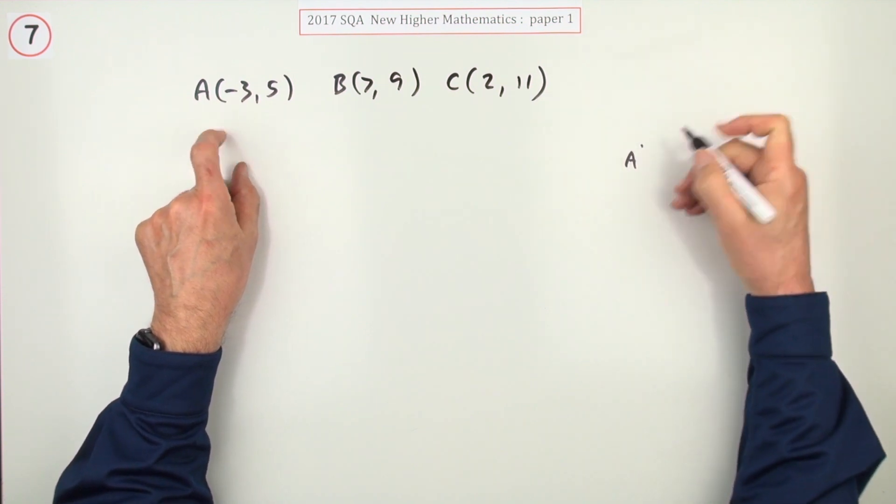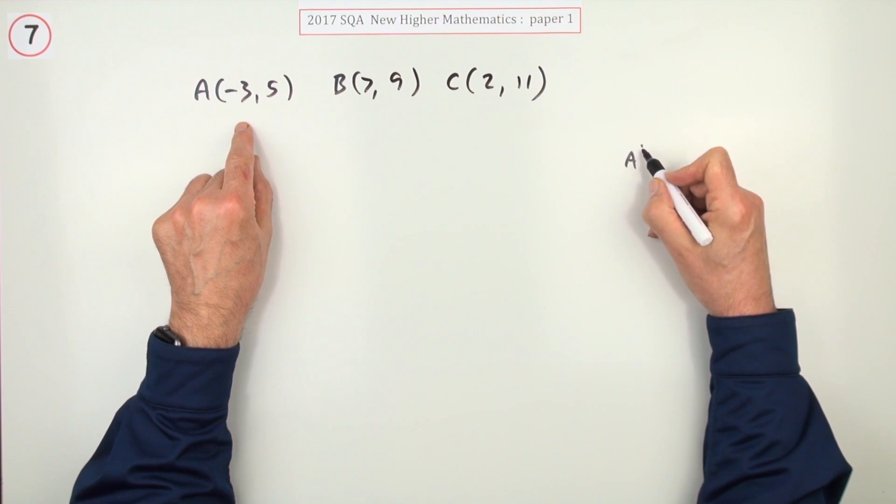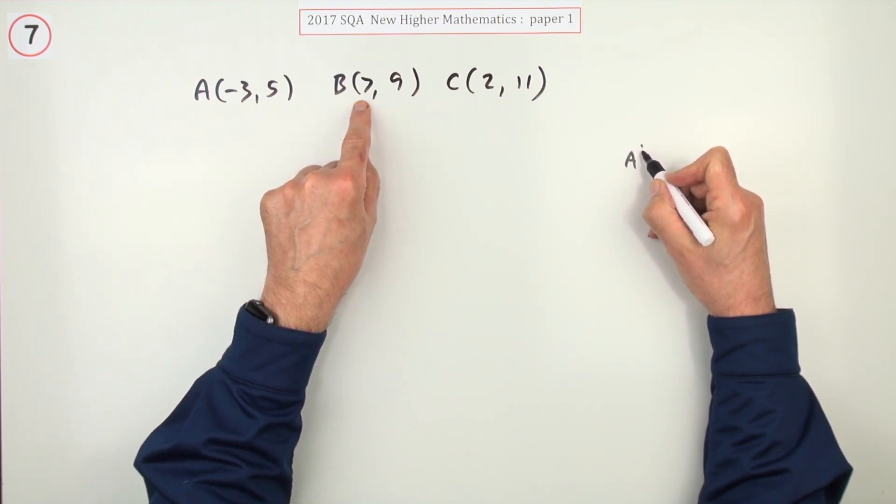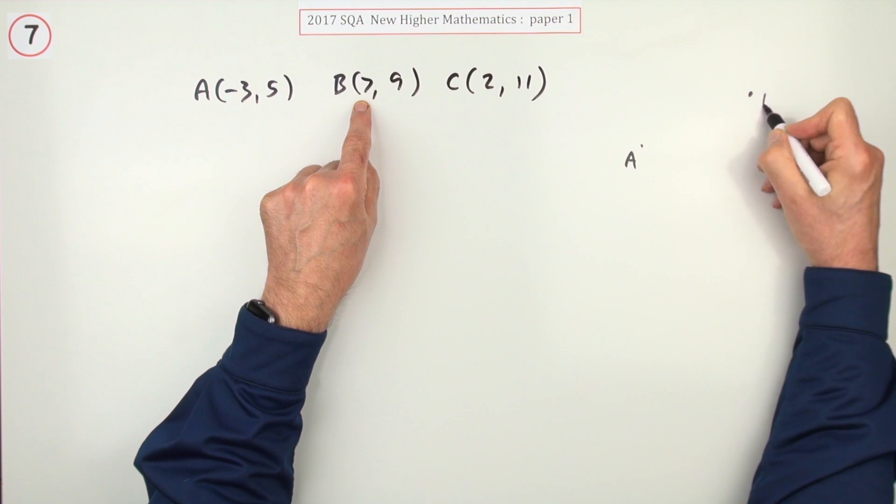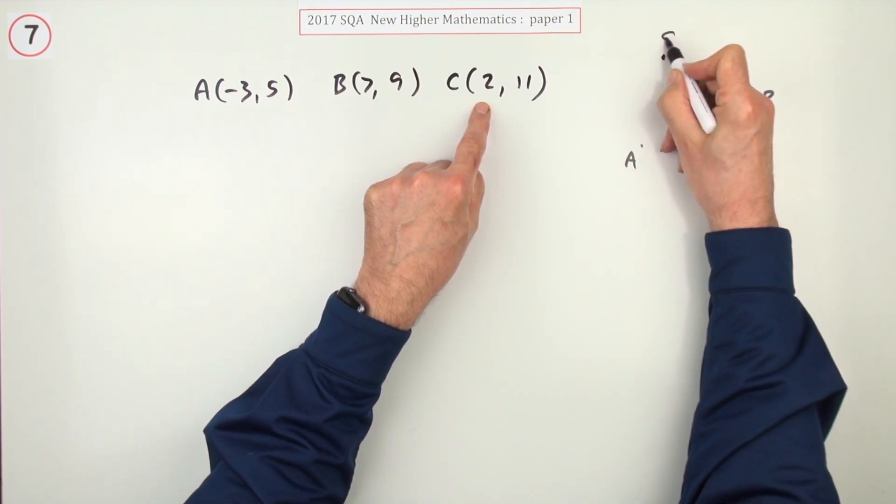Well, quick sketch, but the order doesn't actually matter because you only want the relationship between the sides, but I'll put it down this way anyway. Negative 3, 5. B is 7, so it's further along and higher up, so I'll put B there. And C is somewhere in between, but higher still, so I'll put it there.